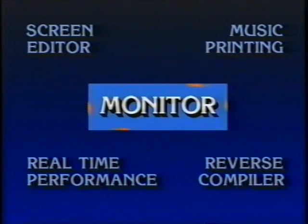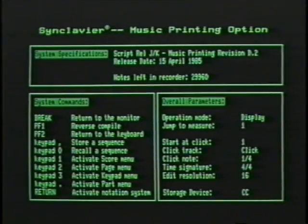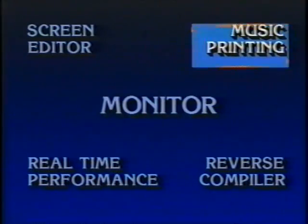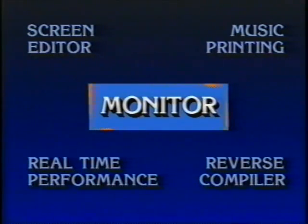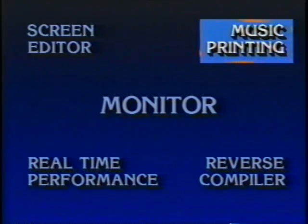The monitor is now active. The monitor responds to short three- or four-letter commands. For instance, we can type a command to call up the music printing program. I'll type the command 'plot' and press return. Here you see the music printing main menu. The music printing module is now active — this program is used to transcribe the sequence that is in the memory recorder. It has its own series of menus. We'll come back to music printing later. You can also go directly between modules without always coming back to the monitor. For example, you can go from any menu in the real-time system directly to music printing to transcribe something you've recorded.